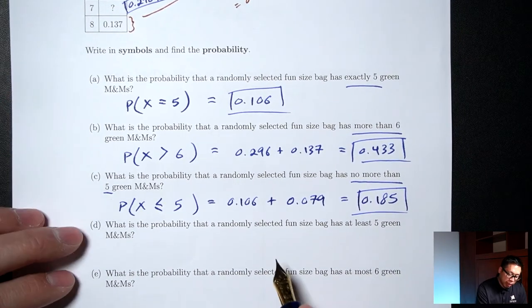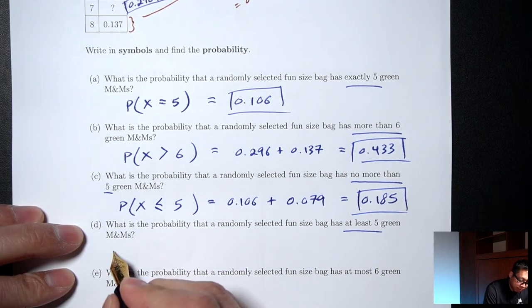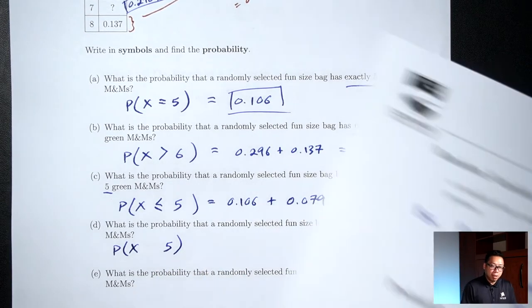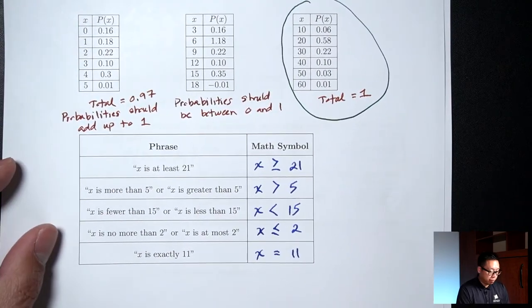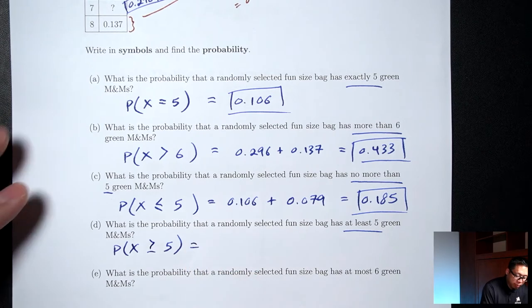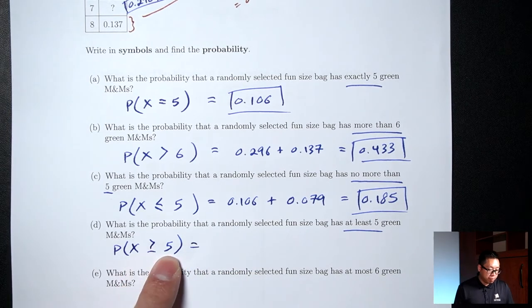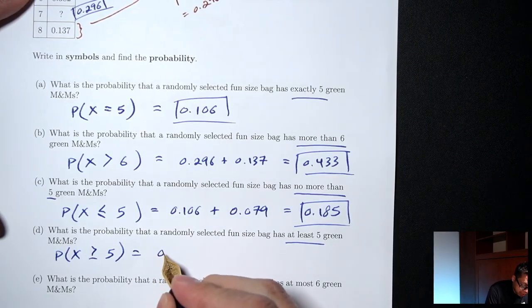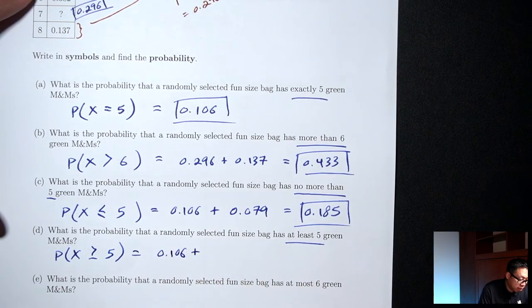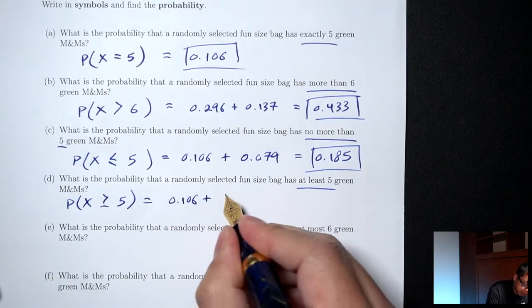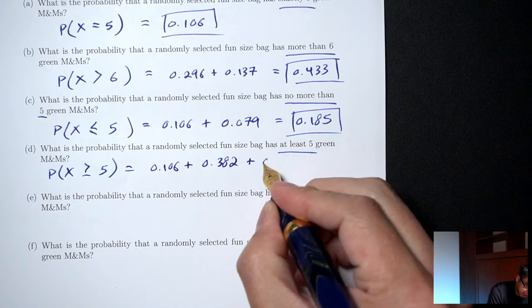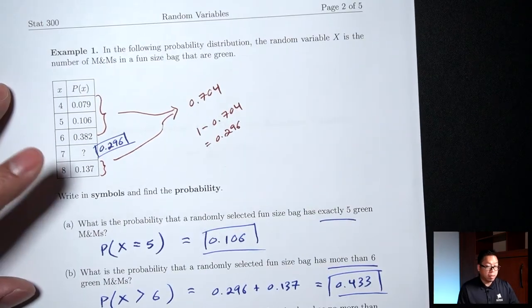Part D: What's the probability a bag has at least 5 green M&Ms? 'At least 5' means X ≥ 5 — the equals part means include the 5, so 5 and up: x = 5, 6, 7, 8. Add the probabilities: 0.106 plus 0.382 plus 0.296 plus 0.137.